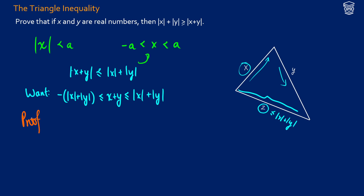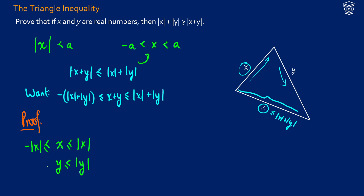For our proof, let's start by thinking about x and y on their own. For x: it is going to be less than or equal to the absolute value of x, and greater than or equal to negative the absolute value of x. Now y is going to be the same thing — y is less than or equal to the absolute value of y, and greater than or equal to negative the absolute value of y.